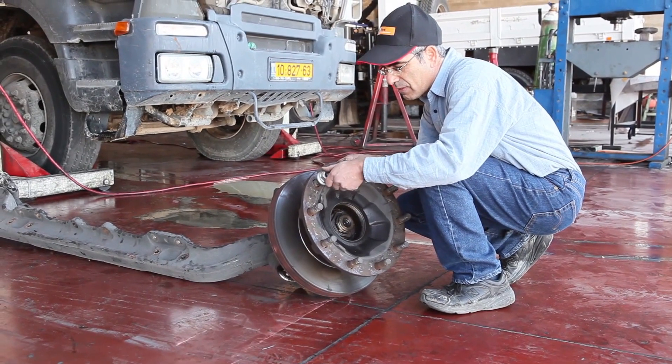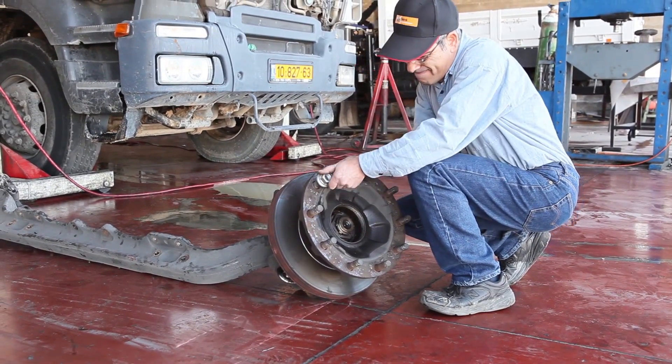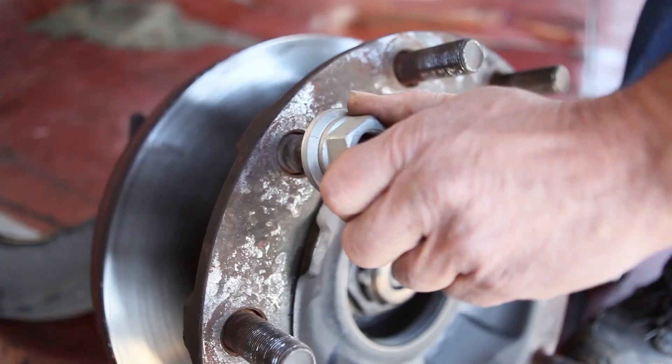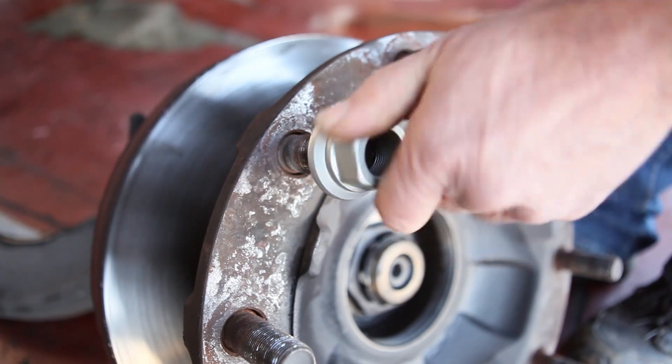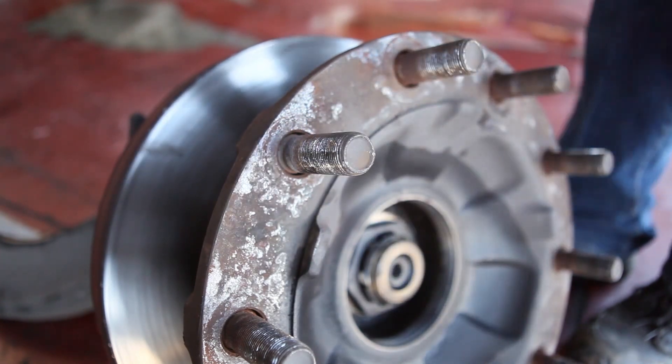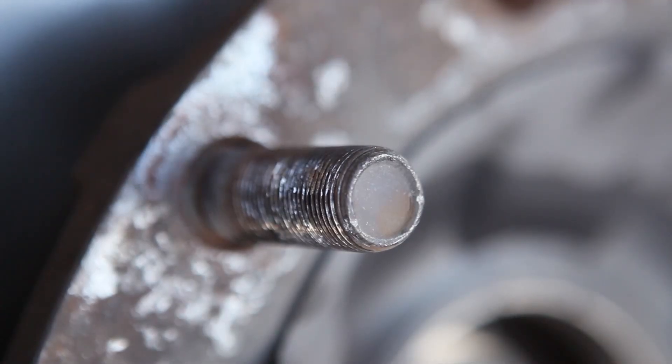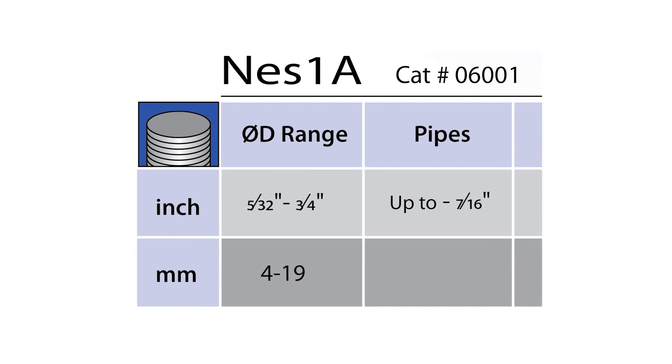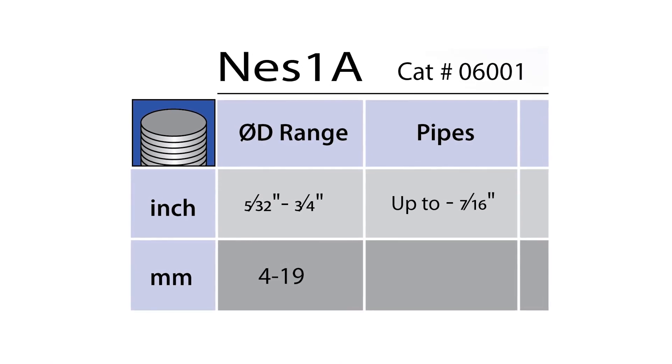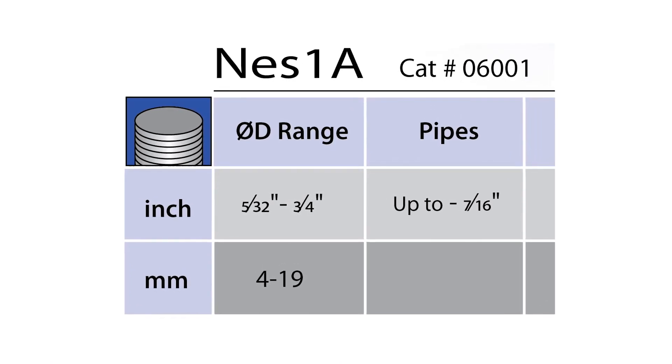There is no need for measuring or calibration. The stud thread is damaged and the nut will not fit back onto the bolt. Therefore, the wheel cannot be properly connected. Using Ness 1A, we can fix any type of thread between 4mm to 18mm or 5/32 of an inch to 11/16 of an inch.